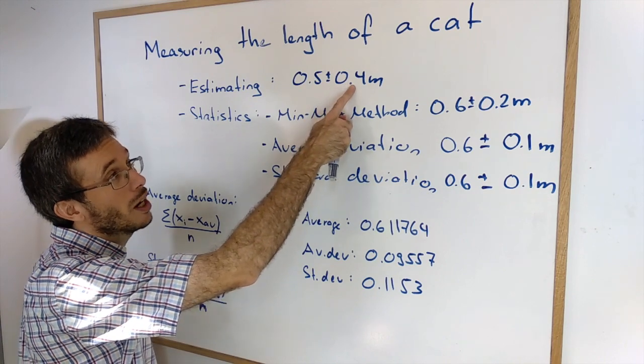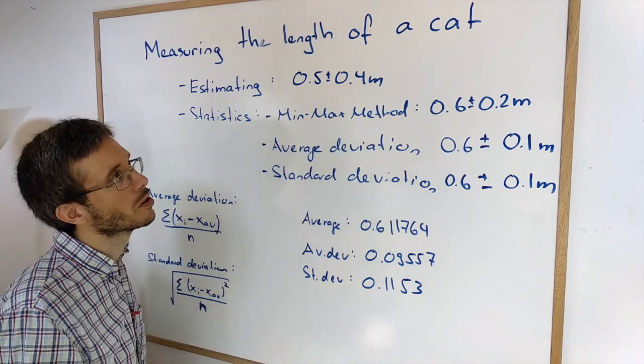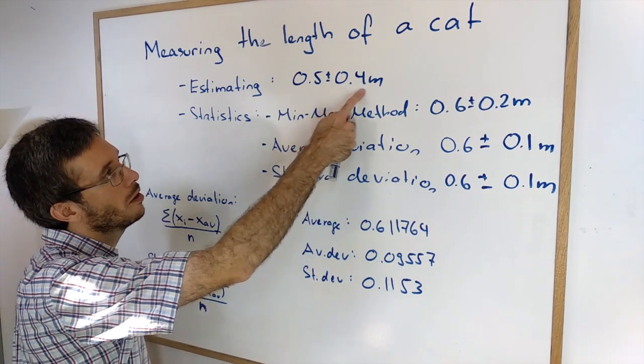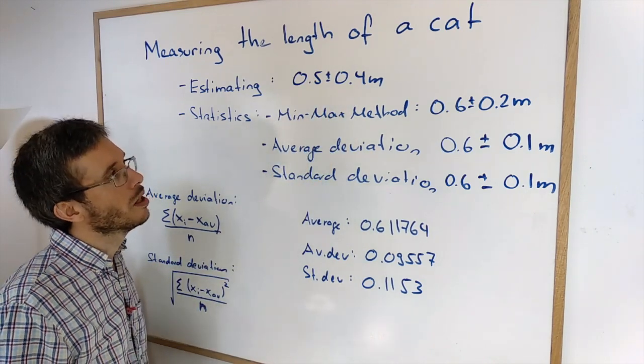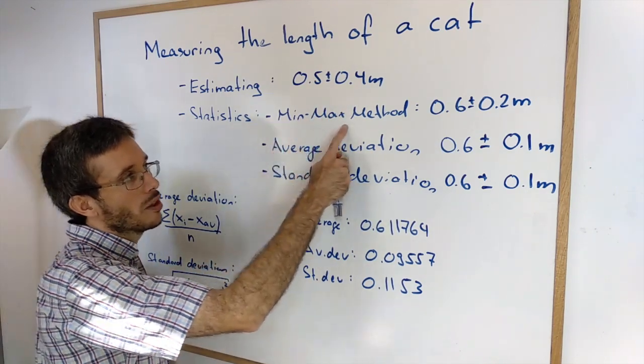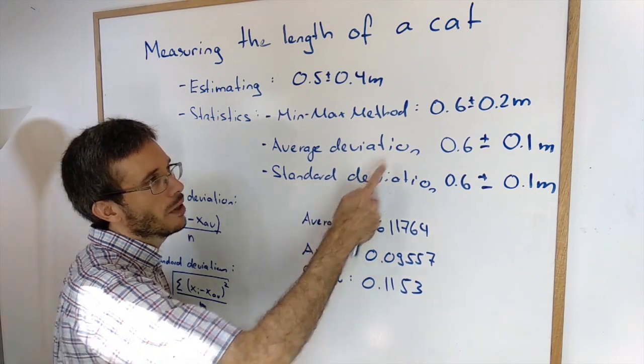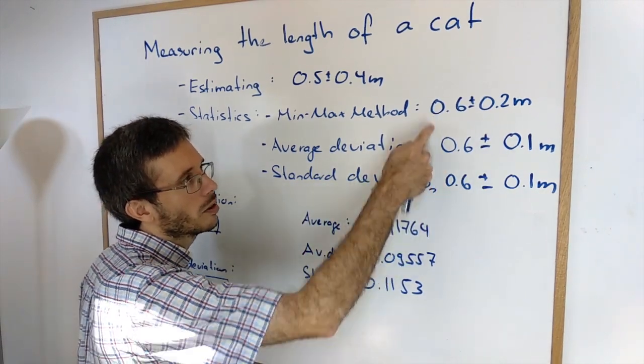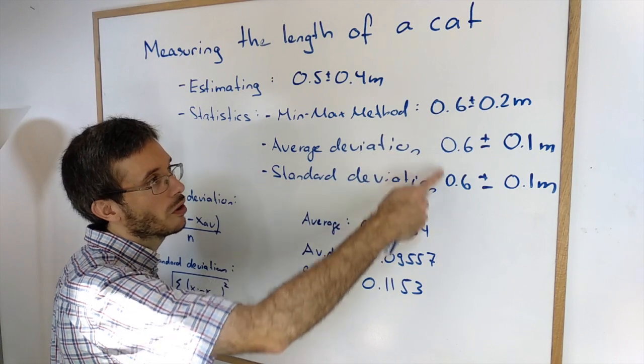I didn't think I have high precision in my measurements. When I did the min max method, the average deviation and the standard deviation, in this case it turned out the value here became the same for all of them.